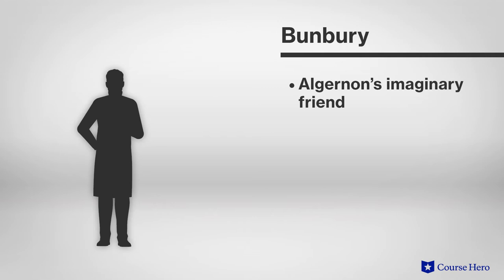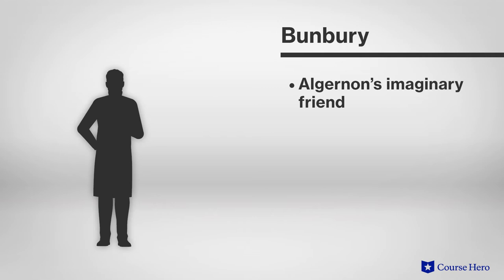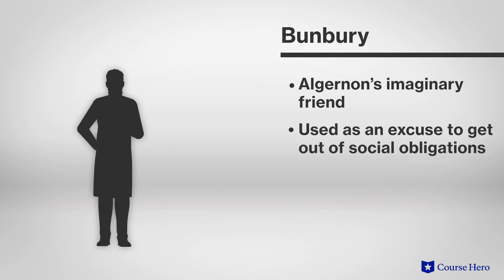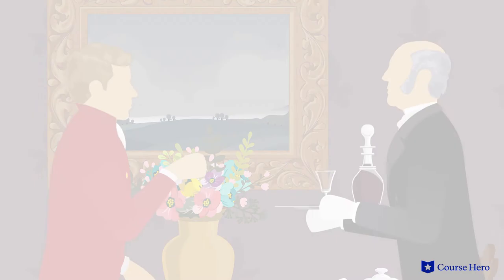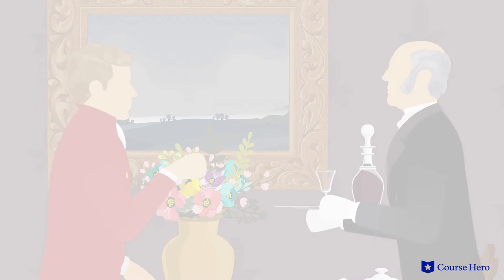Bunbury is Algernon's imaginary friend, referred to as an invalid, which is an outdated and inappropriate term today. Algernon uses Bunbury's illness as an excuse when he needs to get out of social obligations. And when he decides to visit Cecily, he tells Lane he's going out Bunbury-ing.